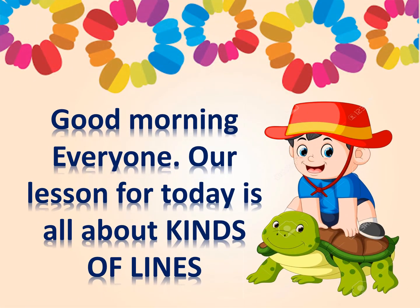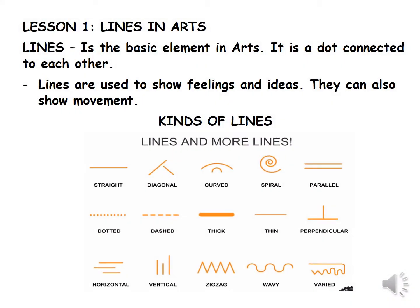Good morning everyone. Our lesson for today in Arts 2 is all about the kinds of lines. Lines in arts — what is lines? Lines is the basic element in arts. It is a dot connected to each other. Lines are used to show feelings and ideas. They can also show smoothness. Here are the kinds of lines.